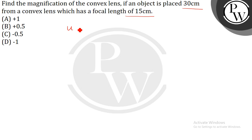Here it is given that U is equal to minus 30 cm because the object distance is always negative, and F is equal to 15 cm.